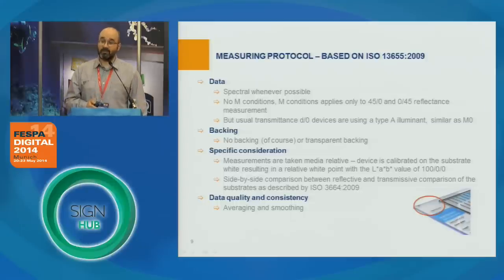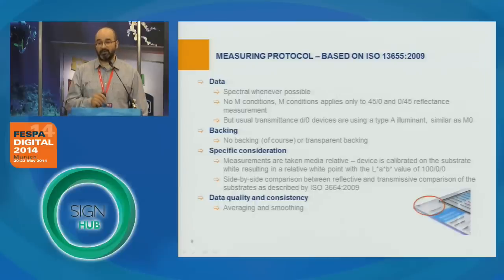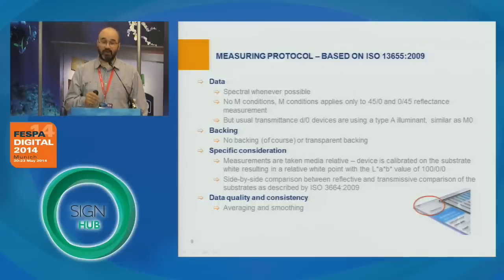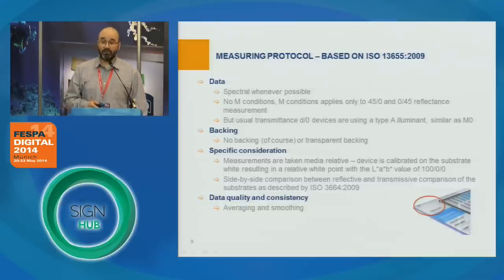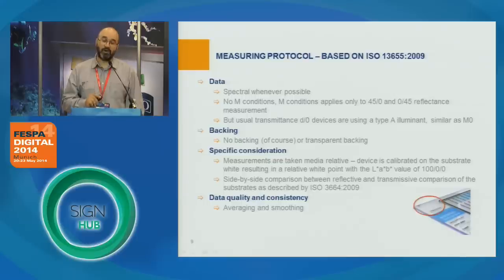There is no M condition for D0 measurement, as there is no specification in the standard. But usually these spectrophotometers use the same type A illuminant as any M0 device. There is a current revision of this standard, and most likely there will be some modification in how D0 geometry will be defined. From the point of view of backing, we have either no backing — since we are measuring transmissive — but some substrates require a transparent backing to allow meaningful measurement. All measurements in transmission mode are done relative to the substrate, meaning the spectrophotometer is zeroed on the substrate itself.